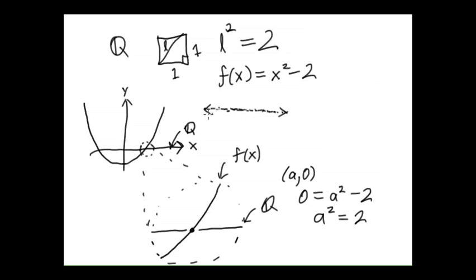And this brings us to the point of this video. We're going to be investigating the nature of these gaps, motivating these gaps in Q and deciding that they are really the fundamental problem with Q. For instance, the gaps are the reason that we can't solve this equation — that this graph doesn't actually cross the x-axis.